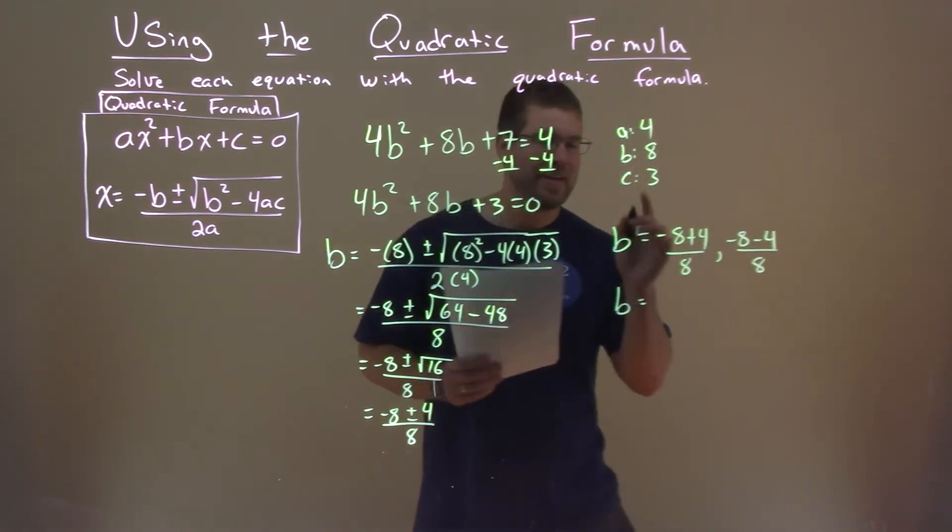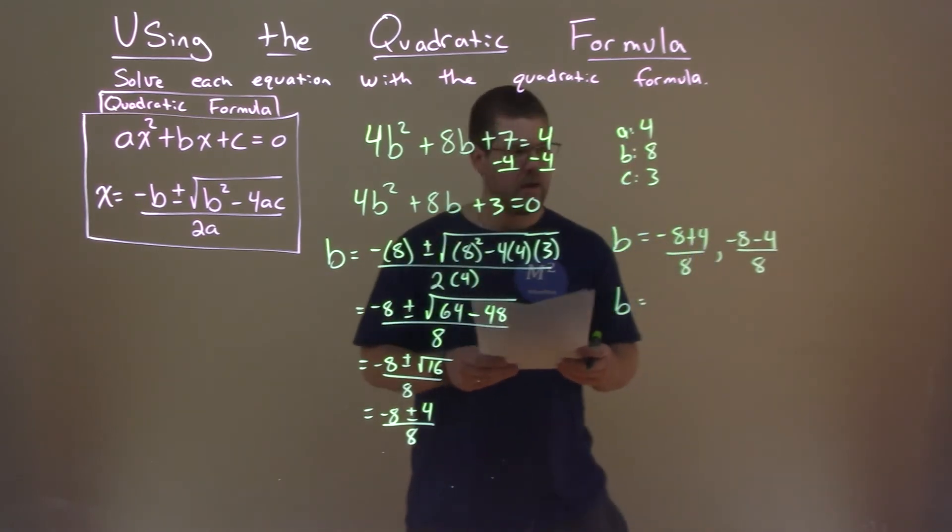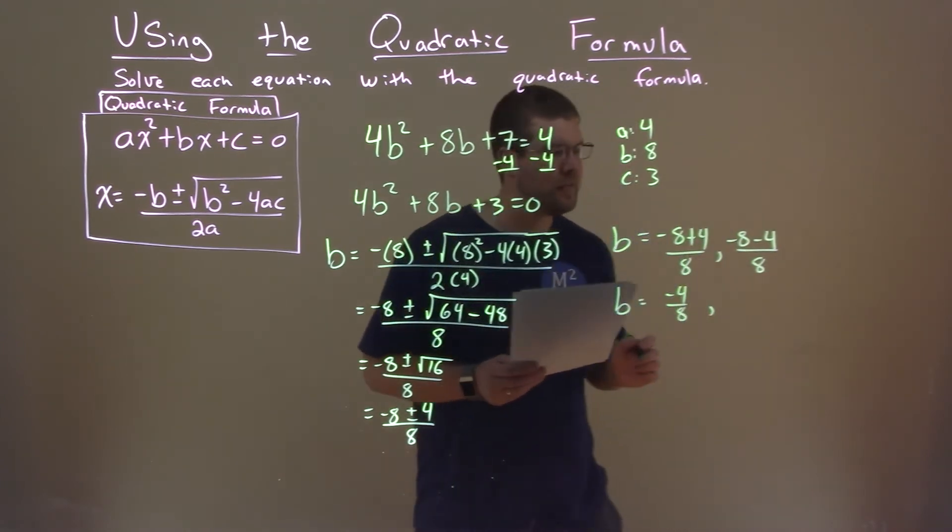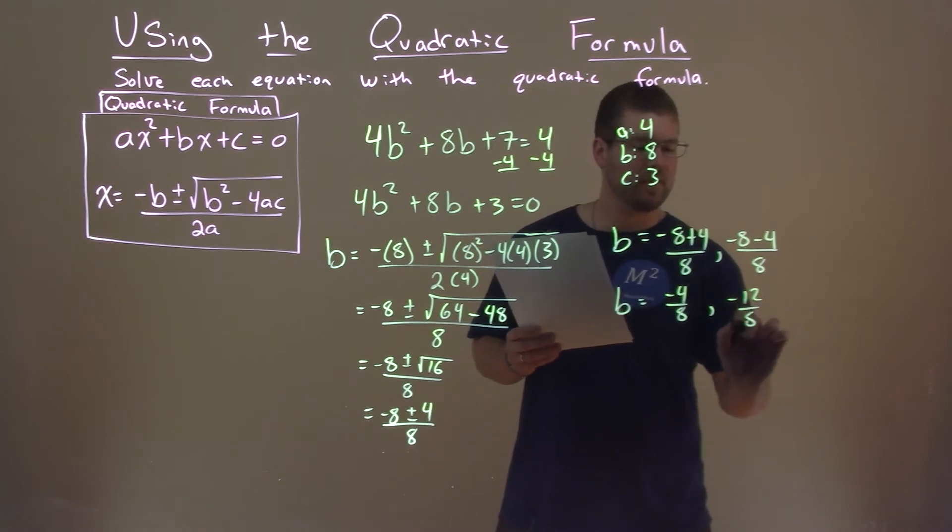And we're going to simplify each one individually. Negative 8 plus 4 is negative 4 over 8, and negative 8 minus 4 is negative 12 over 8.